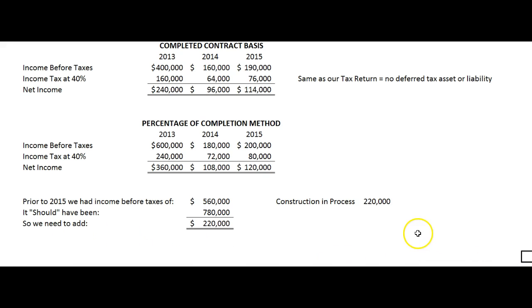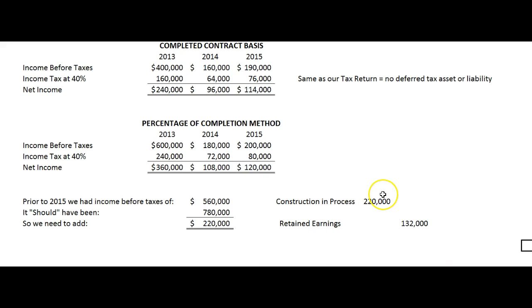That means adding that $220,000 estimated gross profit into work in process, which is called construction in process. We also have to catch up retained earnings. Retained earnings is on the right-hand side of the balance sheet so it increases with credits, and we have to account for the after-tax effect: that $220,000 would have been taxed at 40%, so retained earnings grows by 60% of that. We credit retained earnings for $132,000, which is $220,000 times 60%.